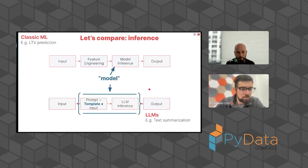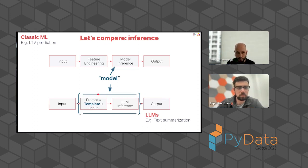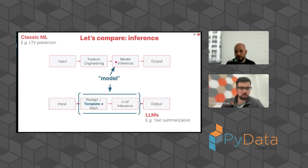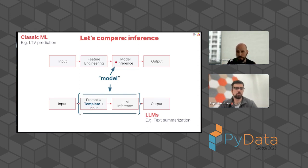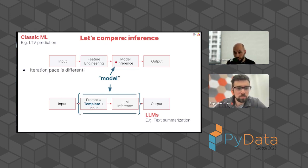In terms of what actually constitutes a model — this is where I think the two worlds are the most different. In the classic case, you have some weights and some features that represent a model. In the LLM, it's really a prompt template that you fill with text along with an LLM foundational model. Together, it constitutes a model. So the way I like to think about it is a prompt template is a bit like a hyperparameter. Together with an API, you get a model. Because of that, the iteration pace is much different — within the LLM world it's much easier to get to production versus the classic ML case.